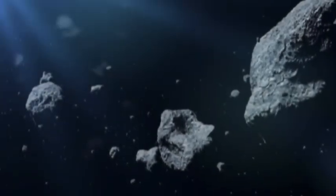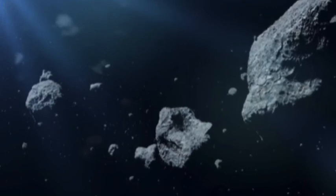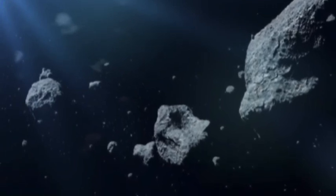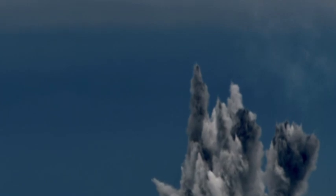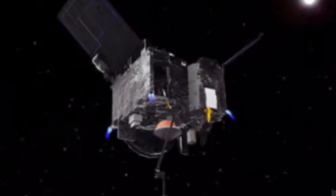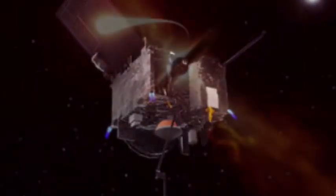NASA says three asteroids will fly past Earth on Wednesday, with one as big as the Statue of Liberty. The asteroids will pass at a relatively close, albeit safe, distance, with one measuring about the same size as the Statue of Liberty, data from NASA's Center for Near-Earth Studies shows.